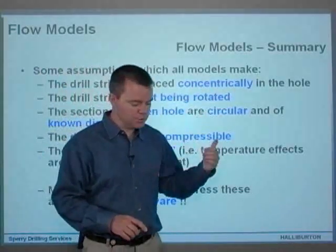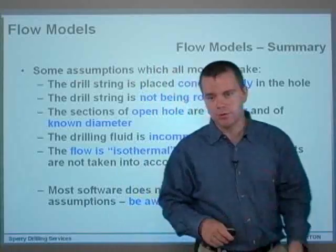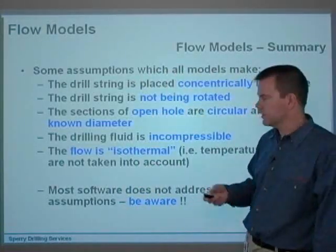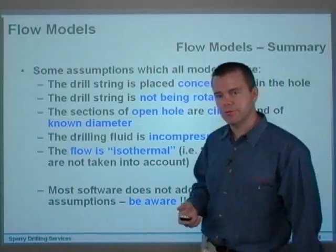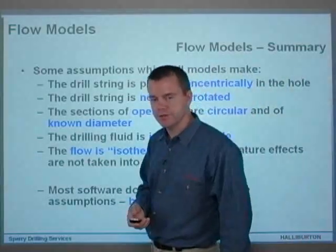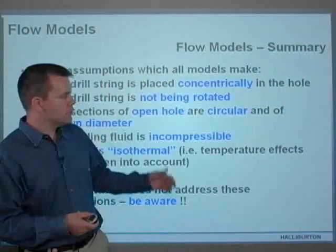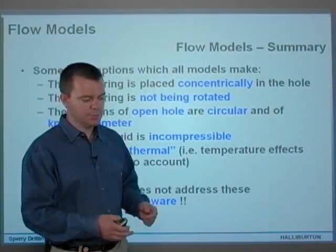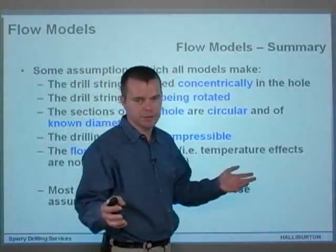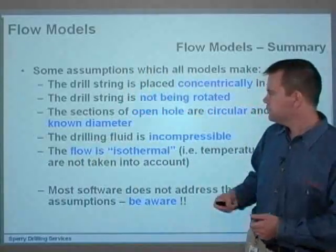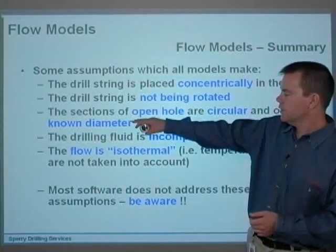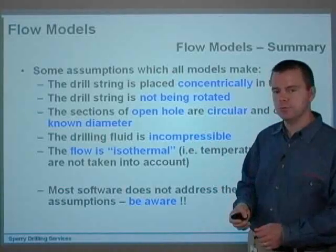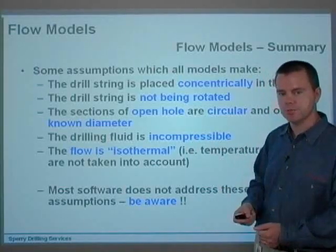The third assumption is that the sections of open hole are circular and of known diameter. When you do a caliper, they're very rarely completely circular — they're more elliptical — and also very rarely all one diameter. You quite often have washed out areas and ledges. So the models are all assuming a perfect cylinder in your open hole. That's another big assumption to make.